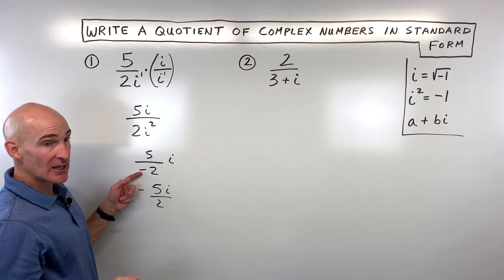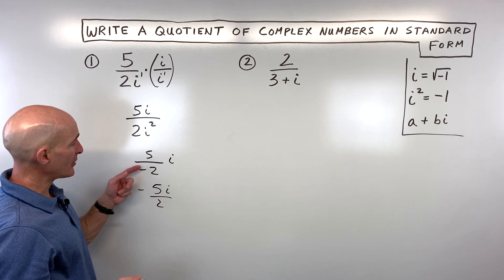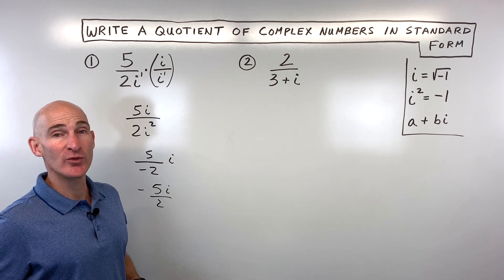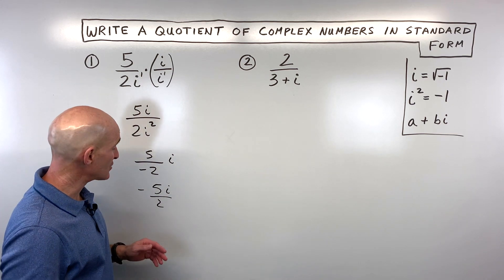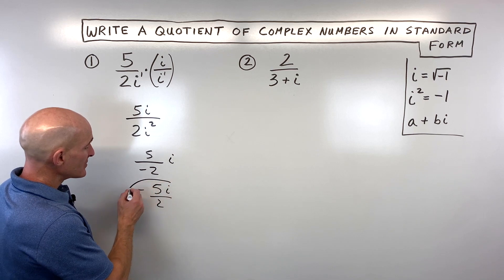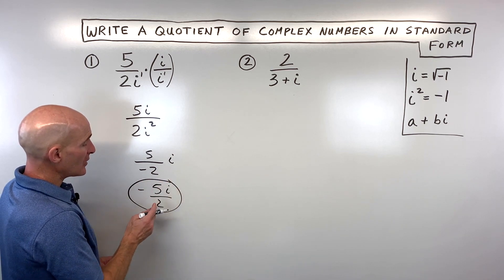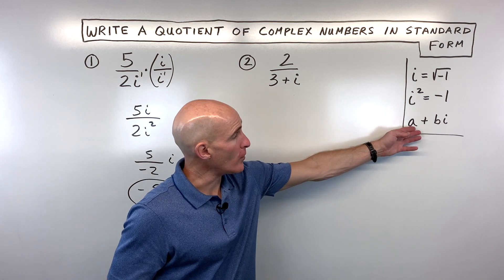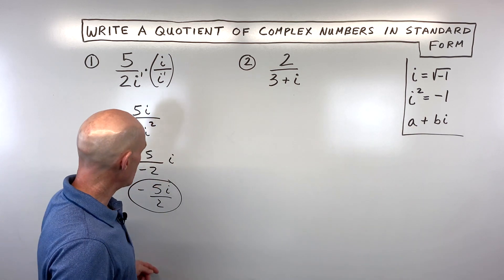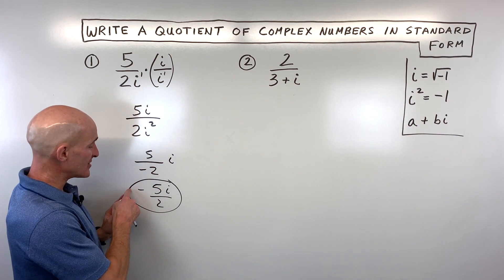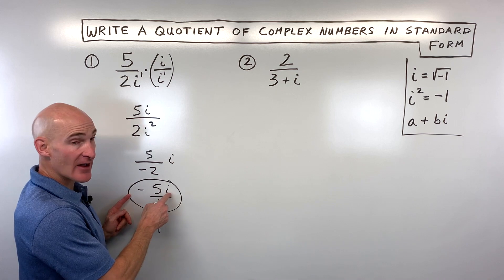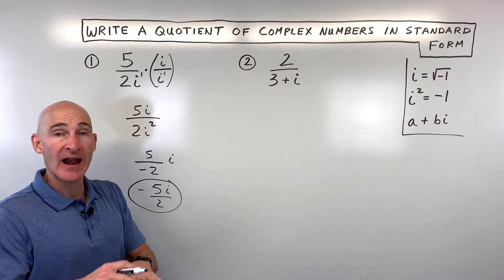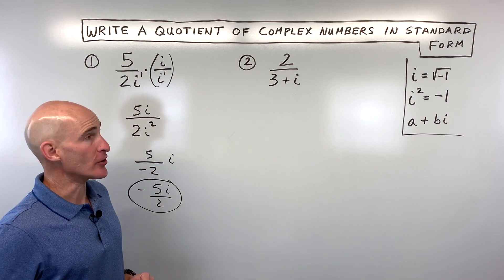So you can write this as negative 5 halves i, or you can write it as negative 5i over 2. It doesn't matter whether you put the negative in the denominator or the numerator — you don't want to make them both negative, because then the negatives would cancel and it would become a positive quantity. Either of these is fine. Notice that the real part here is actually understood to be 0, so this is like 0 minus 5 halves i.